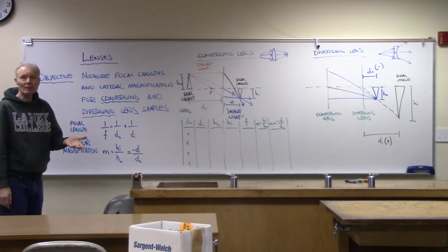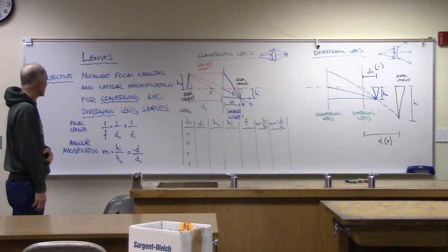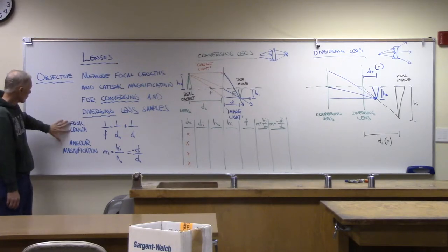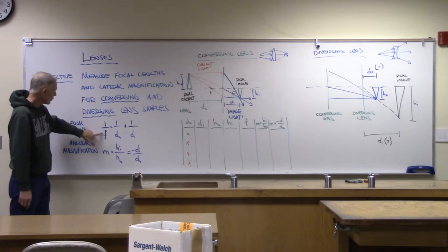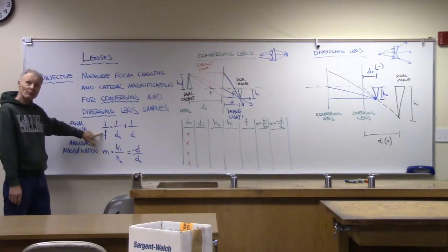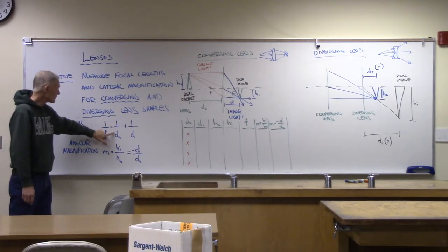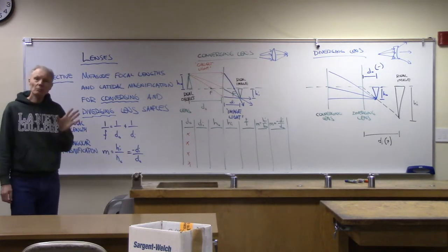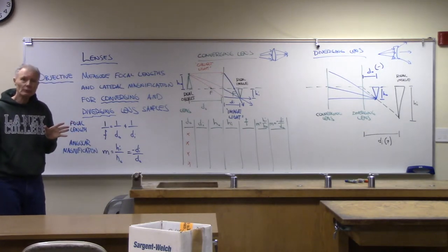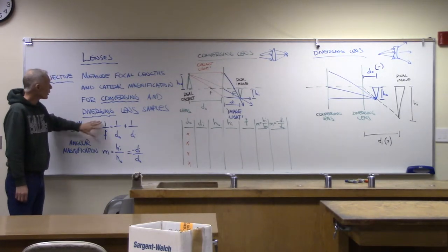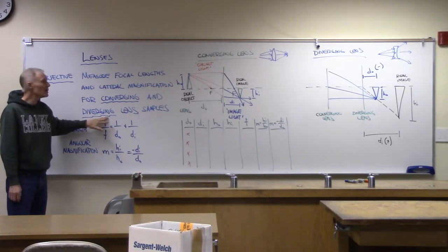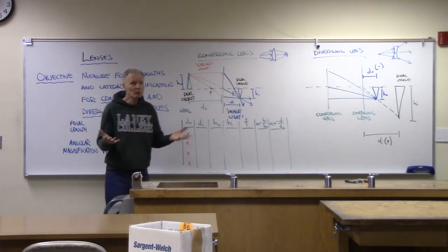The formula we've been looking at in class for focal length is: 1 over the focal length equals 1 over the object distance plus 1 over the image distance. Remarkably, that formula works for both converging and diverging lenses.